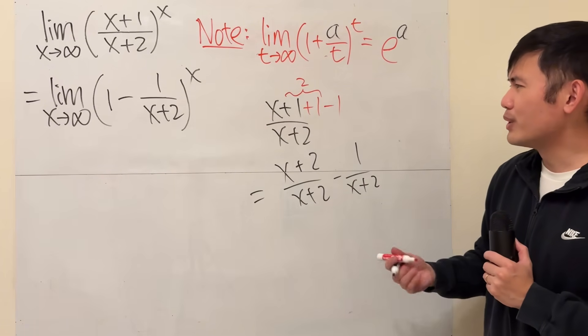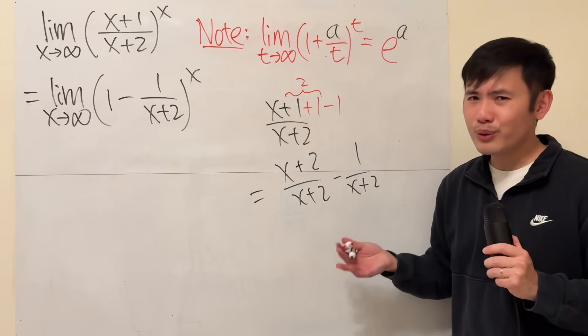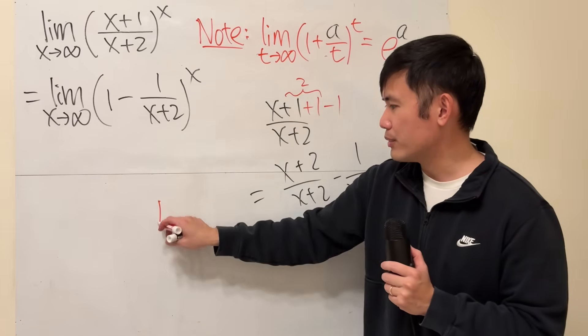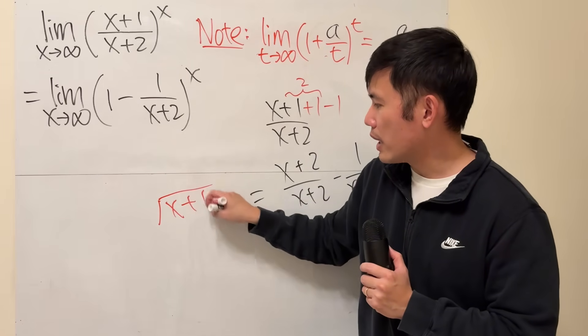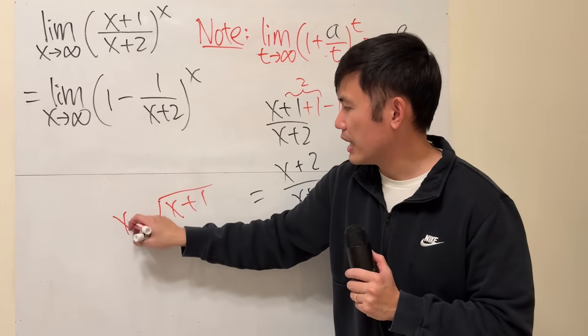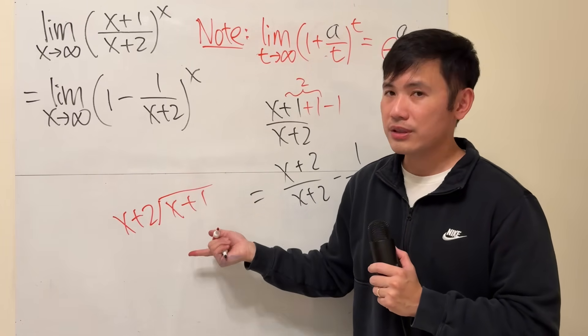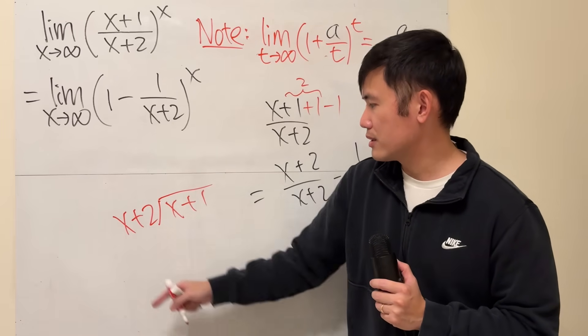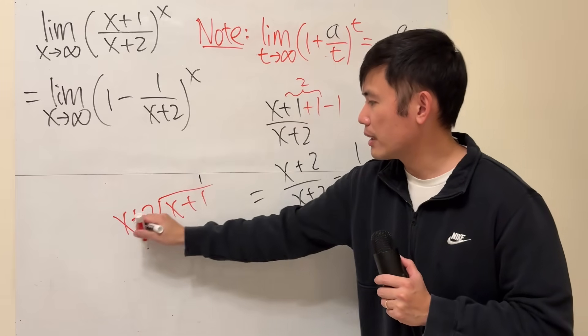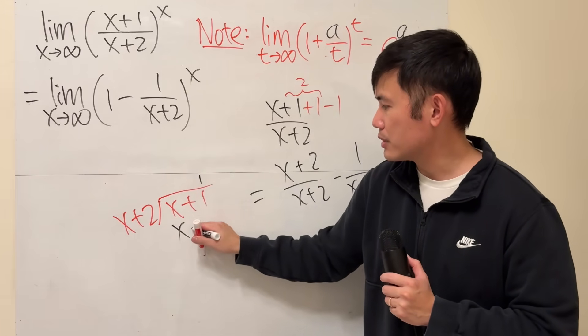That's one way to do it, but sometimes if it's not so convenient for us to do this, then you may just have to do polynomial long division. The top is x plus 1, and then put the bottom on the outside. And then you ask yourself, we have x here already, times what will give you x? The answer is 1. 1 times x is x, 1 times 2 is 2.